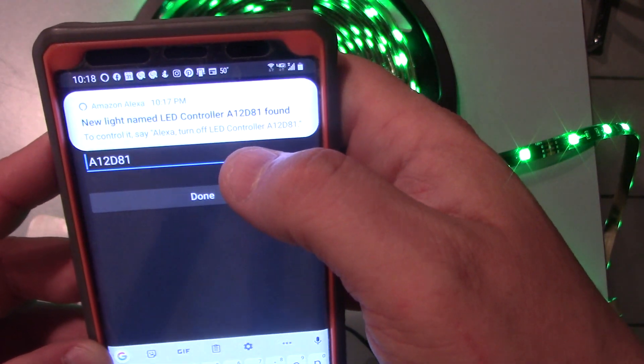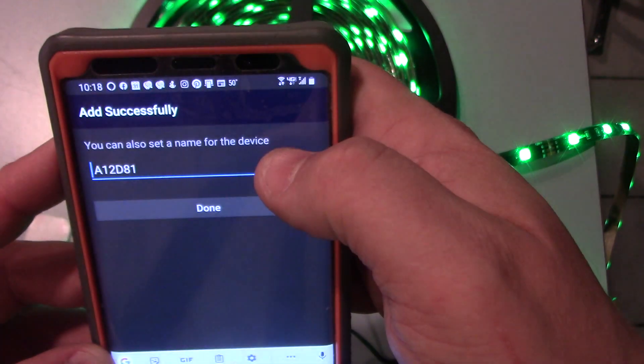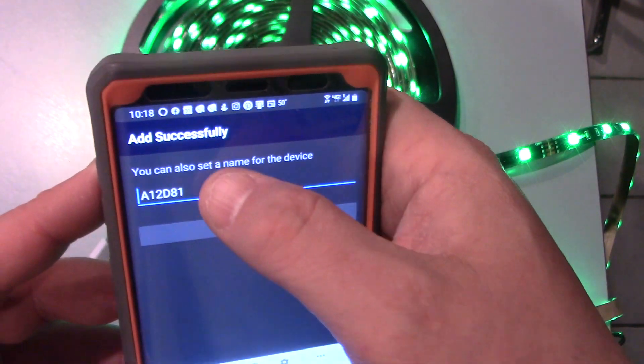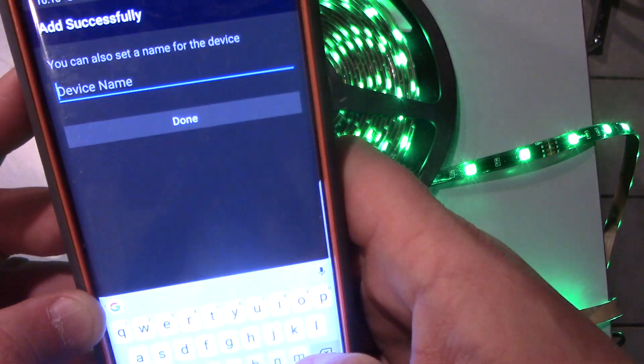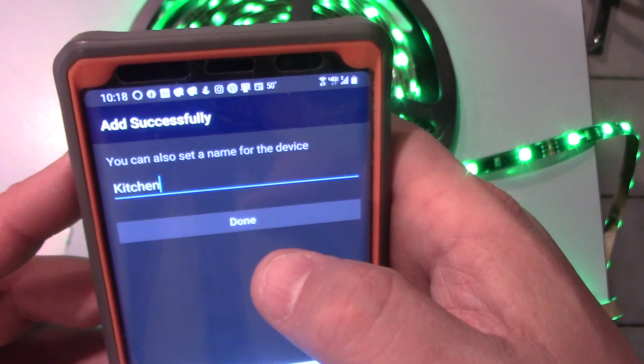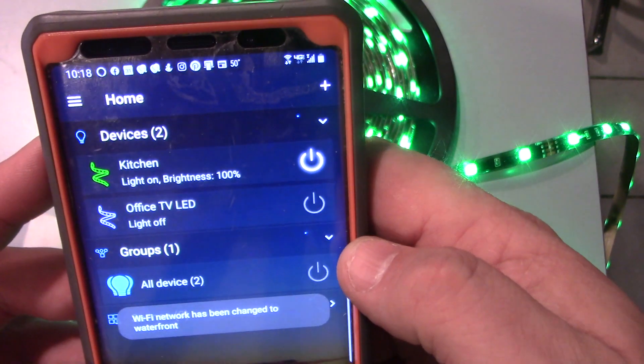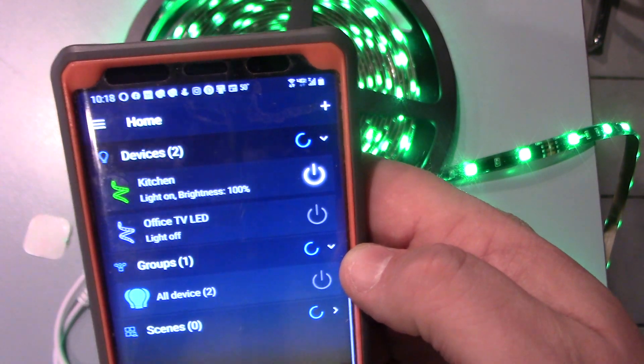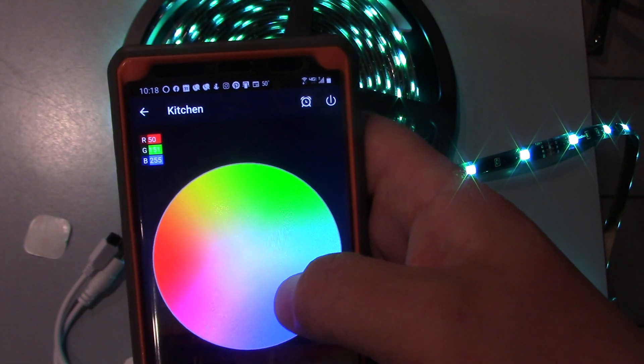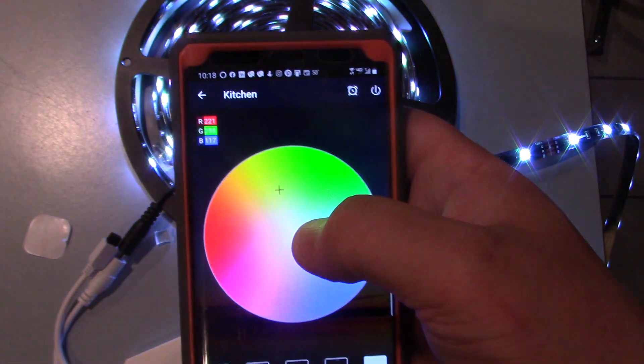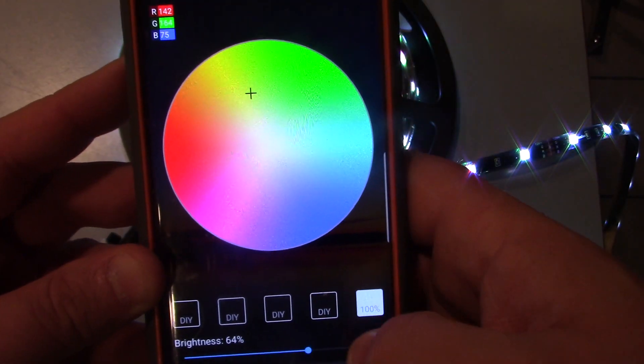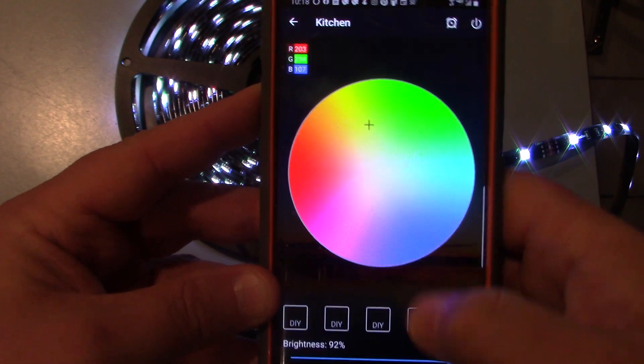And we added it successfully, and we can give it its own name. Now Amazon Alexa already picked it up. A new light named LED control was added, so we can keep it as this just for purposes of identifying it, or we can change it. Since I'm in the kitchen, I'll type kitchen and I'll hit done. So now you see the kitchen shows up. I can go ahead and I can select the different colors to change it to and so on. You could also change the brightness of it by here.